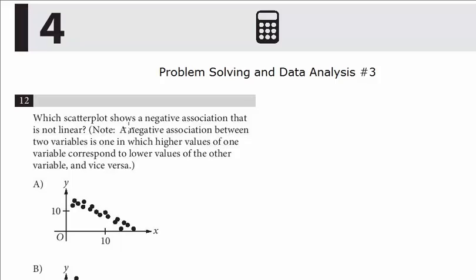Which scatter plot shows a negative association that is not linear? Note, a negative association between two variables is one in which higher values of one variable correspond to lower values of the other variable and vice versa.